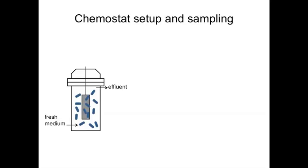We took a closer look at B-theta attachment to surfaces in a bioreactor to better understand the differences between attached and free-living populations of this organism. We grew B-theta in a continuously fed bioreactor, or chemostat, to simulate the human gut environment.